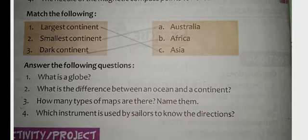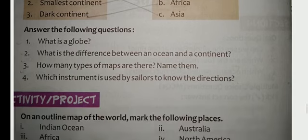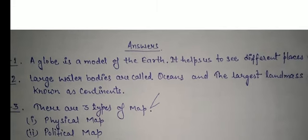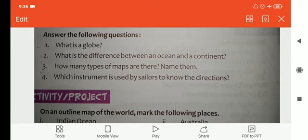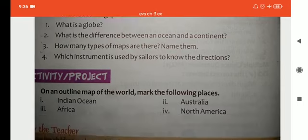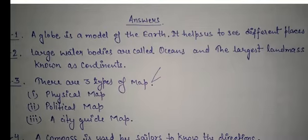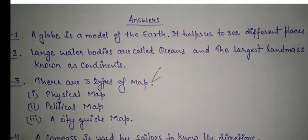Now, answer the following questions. Question 1: What is a globe? A globe is a model of the Earth. It helps us to see different places. Question 2: What is the difference between an ocean and a continent? Large water bodies are called oceans, and the largest land mass is known as a continent.